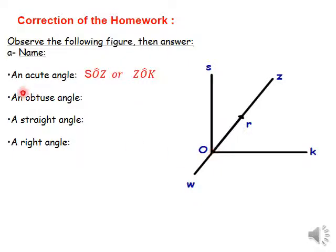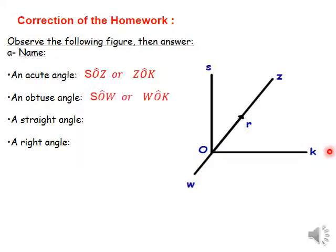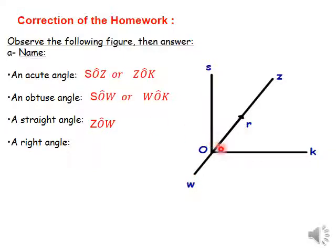An obtuse angle — a big one — this one is an obtuse angle; we put the vertex in the middle, so it's angle SOW. Another obtuse angle is angle WOK. For a straight angle, here I have a straight line, so angle ZOW is a straight angle. For a right angle having 90 degrees, it's angle SOK.